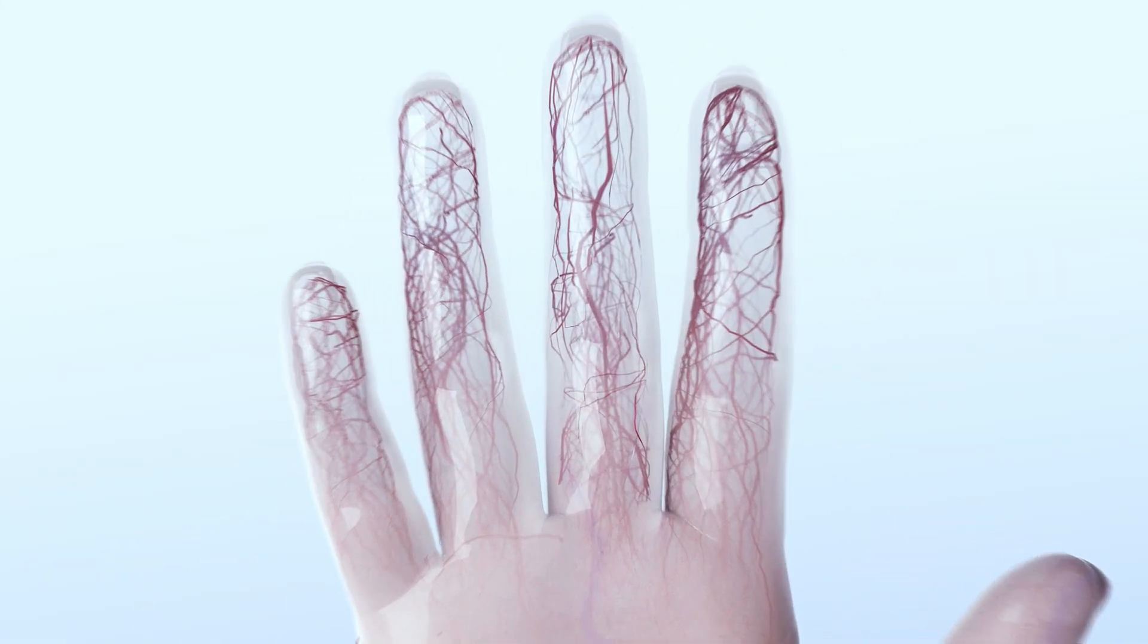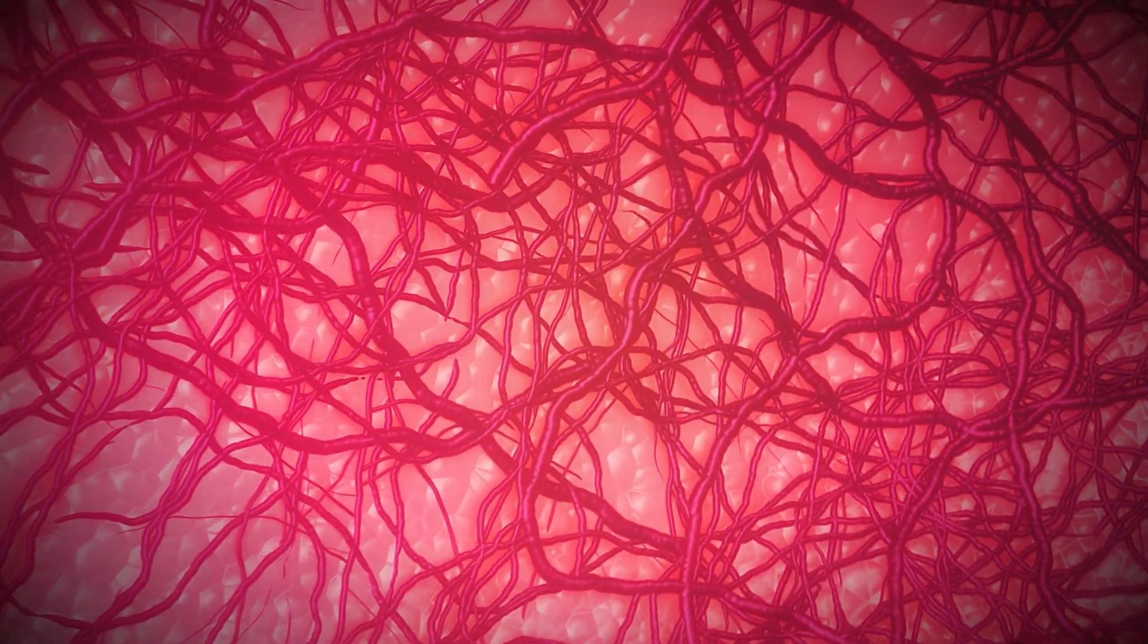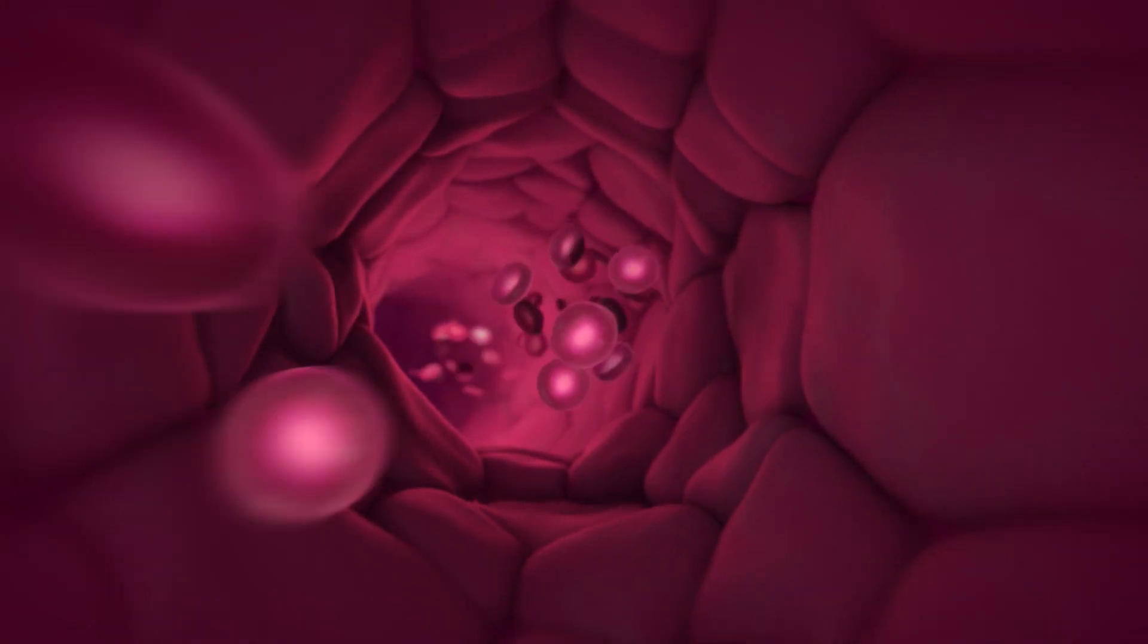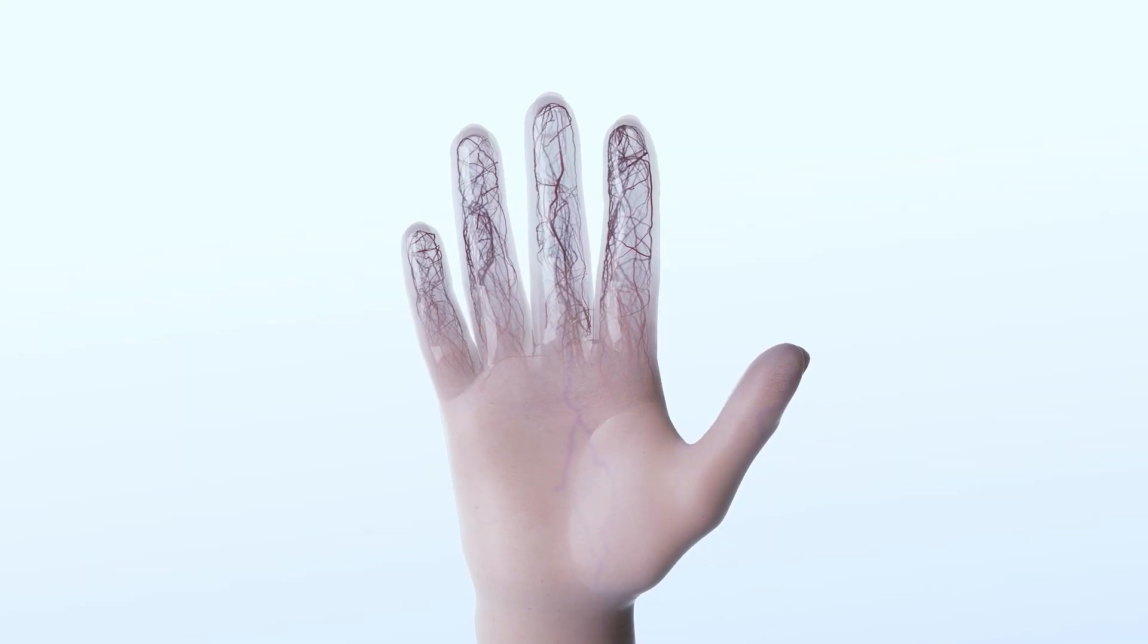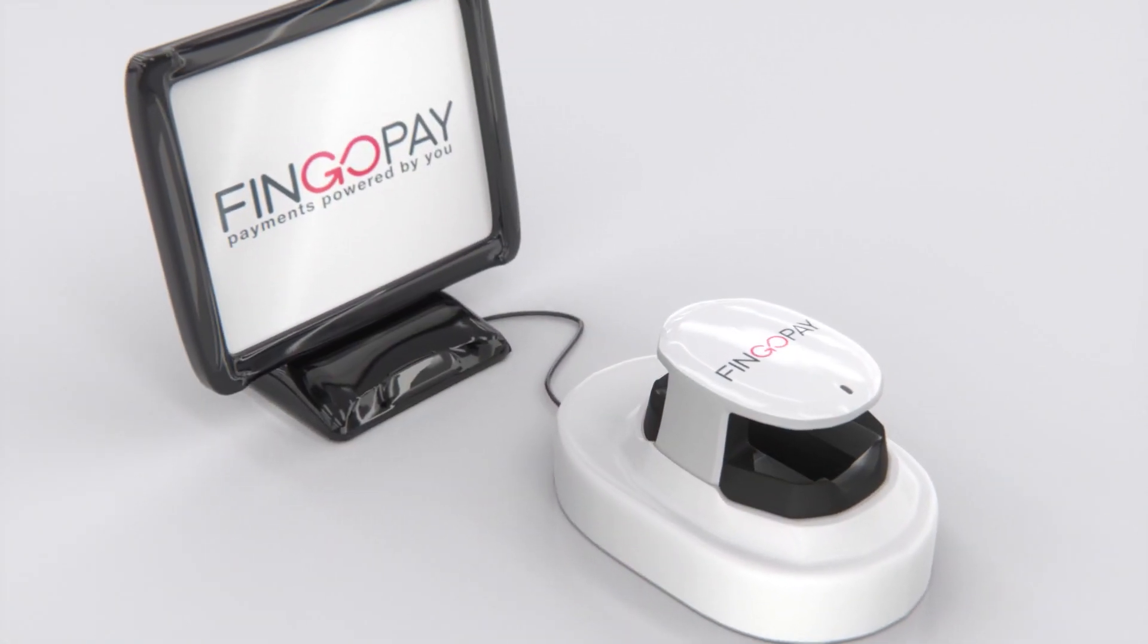We all have a unique vein pattern hidden in our fingers. Now this intricate biometric signature can be used to identify you and pay for transactions. There's no need for cash, cards, or mobile. Finger Pay uses Hitachi Vein ID technology.